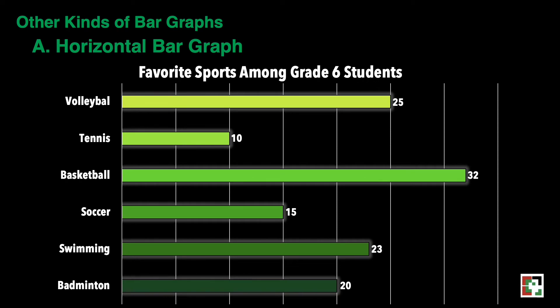There are other kinds of bar graphs, and the first one is horizontal bar graphs. We have here a table entitled Favorite Sports Among Grade 6 Students. We have volleyball, tennis, basketball, soccer, swimming, and badminton.